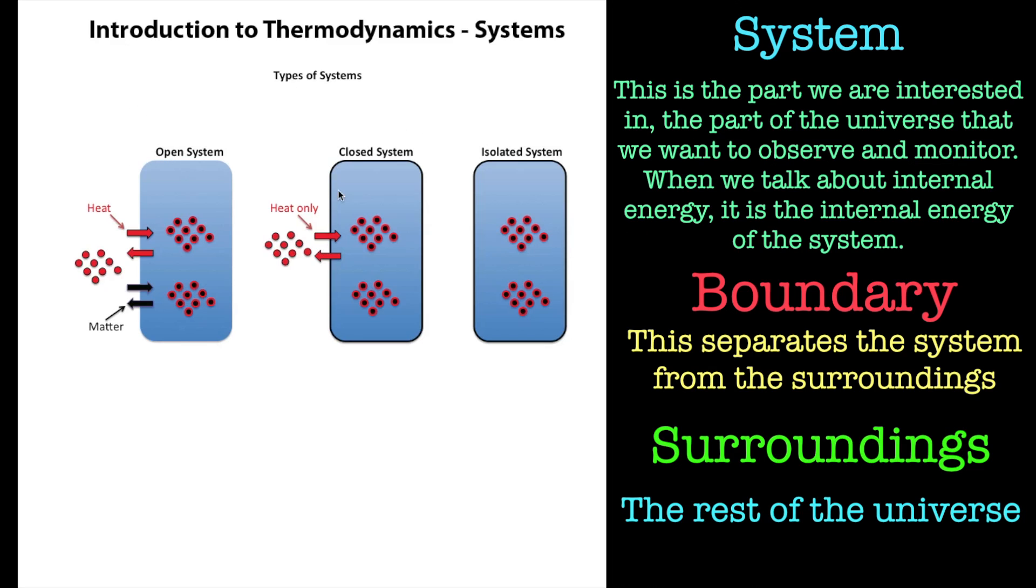The next one along is called a closed system. Now in a closed system, only heat can get in and out. So only energy can transfer between the walls of this boundary. Now this boundary is, like I said before, is a boundary between the rest of the universe and our system that we're interested in.